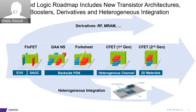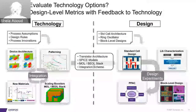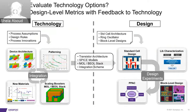Given all these new options for designing transistors, how do we evaluate which option is the best? The answer is DTCO — design technology co-optimization. This method has been around for several years and has proven to be a useful technique to couple design-level experiments back to technology options.